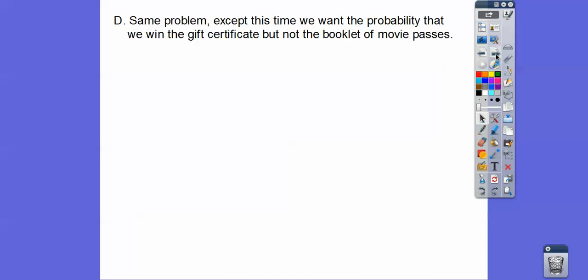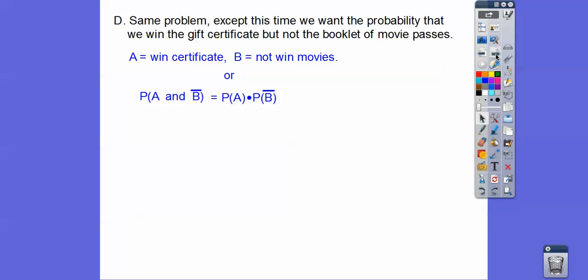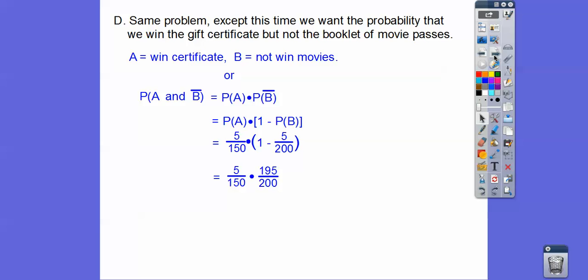Same problem, except this time we want the probability of winning the gift certificate but not the movie passes. This is the probability of A and not B. Remember the complement: it's 1 minus the probability of the event happening. So the probability of not B is 1 minus five over 200. That gives us five over 150 times 1 minus five over 200. After reducing and cross-dividing by 3, we get our final answer: 13 out of 400 — a slightly better chance.